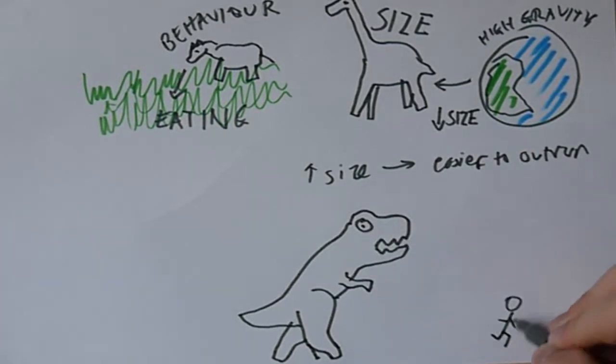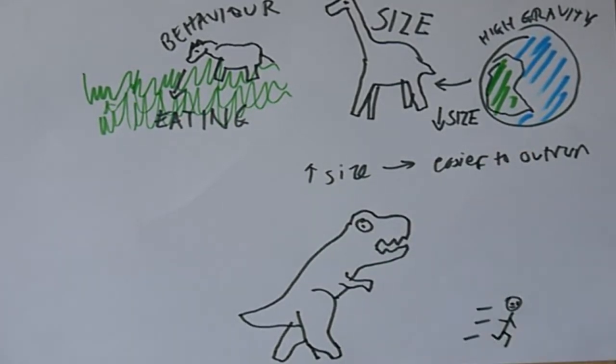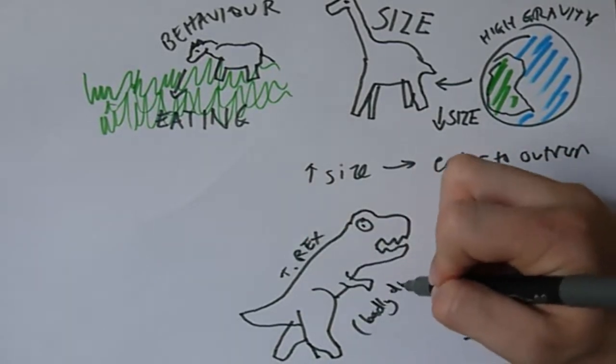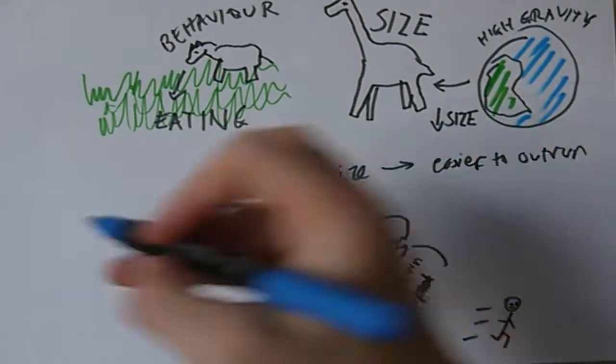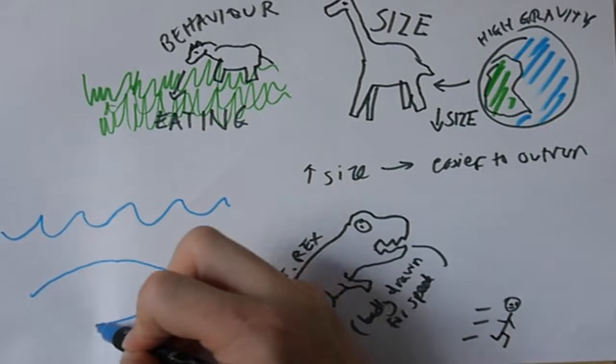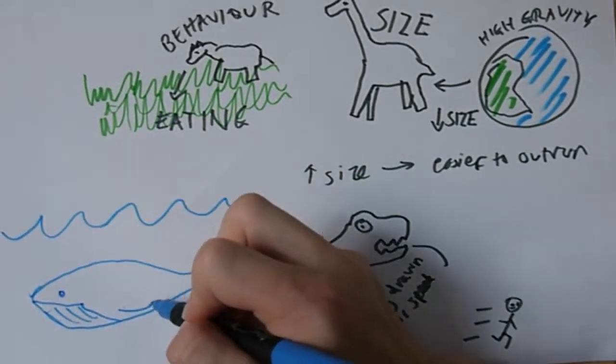Gravity affects all creatures the same way, and extra mass is always heavier, which is exacerbated by the stresses of running. Be aware, however, that an oceanic environment can support extra weight and therefore allow animals to grow larger while not compromising too much in speed.